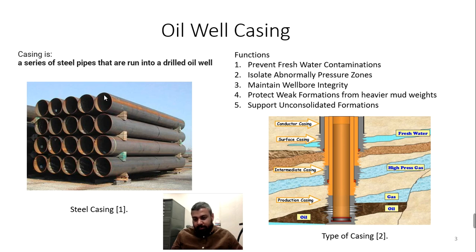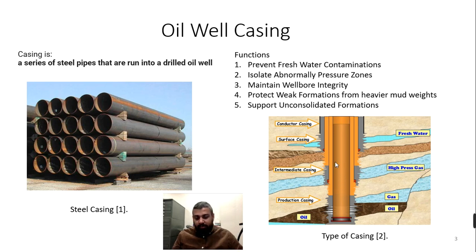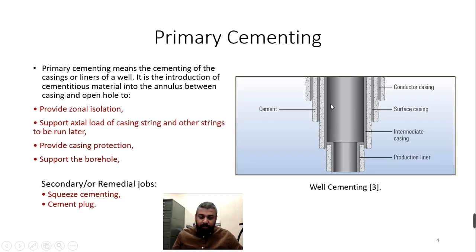We use pipes inside the hole so we can prevent fresh water contamination, control abnormal pressures, and prevent unconsolidated formations from closing the well. We also don't want the oil zone to migrate upward and mix with fresh water. For all those reasons, we need to put the casing down. Once the casing is down, it is loose and can move around — we need to fix it. We fix it by putting cement between the casing strings.